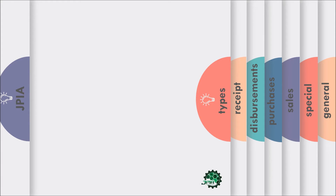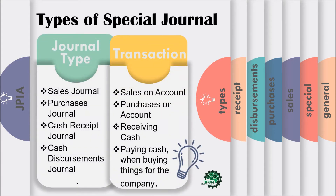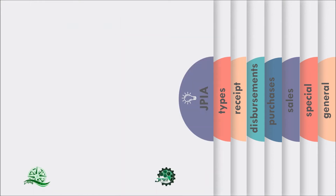To sum it up, here is a simple matrix of the types of special journal. Sales journal are for the sales on account, purchases journal are for the purchases on account, cash receipts journal are for the cash received, and the cash disbursement journal are for the payments of cash when buying things for the company. And lastly, the general journal is for all other transactions of the company that do not fit in the characteristics needed under the special journals.